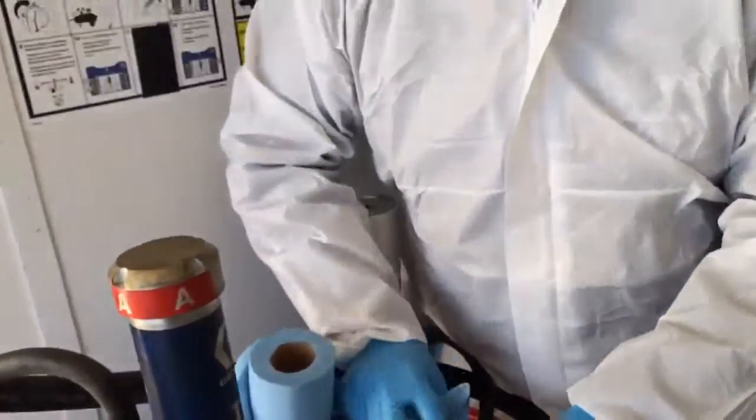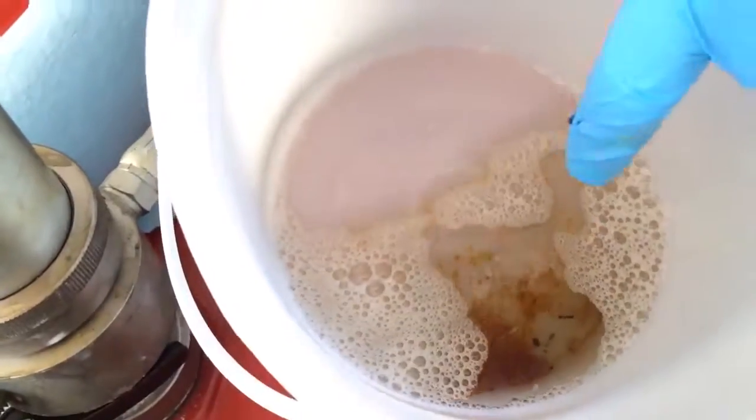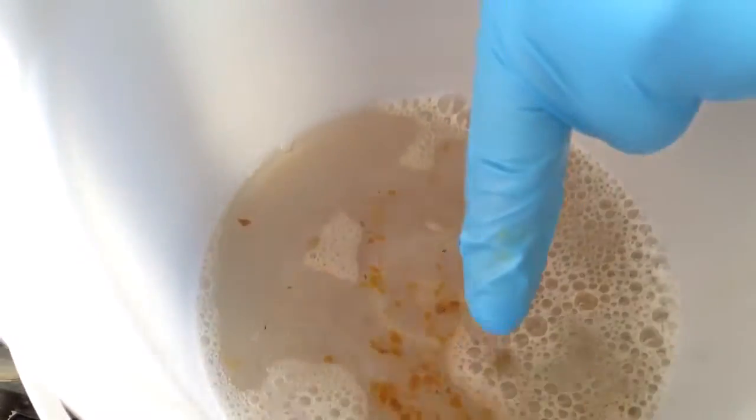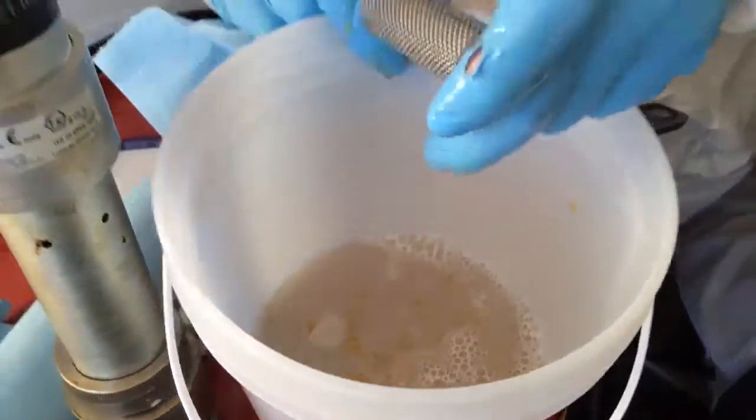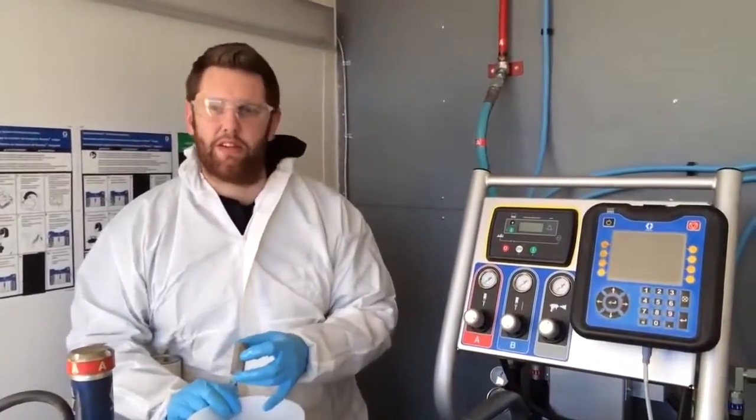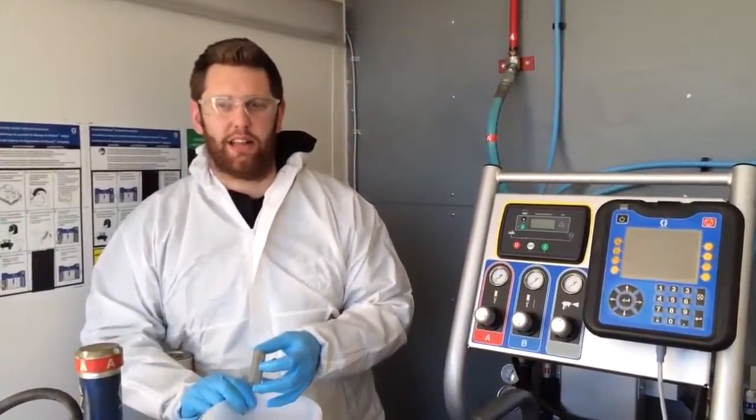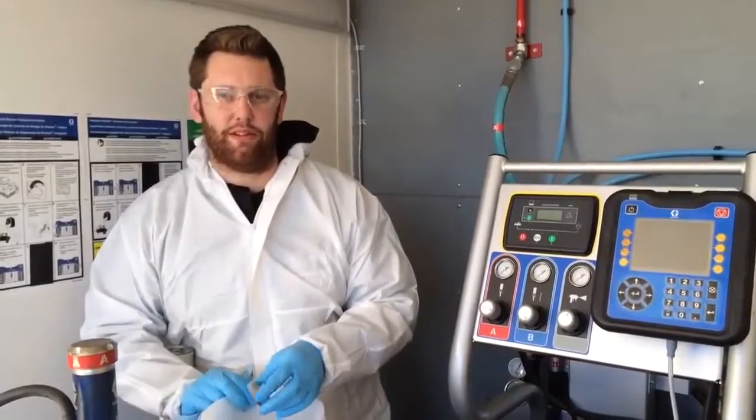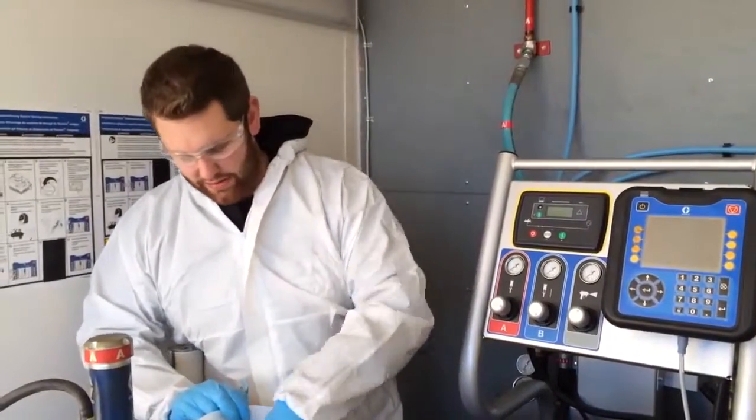If you come take a look here, you can see all the contaminants that were inside this filter. Now, all that stuff was too big to make it past here. Anything that's small enough to make it past this filter is going to be fine to go through the pump. The heaters will eventually end up getting caught in the gun. The gun has a set of filters in it as well. I'll just give that another rinse.